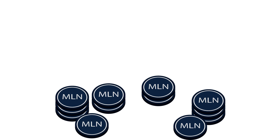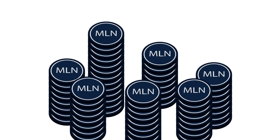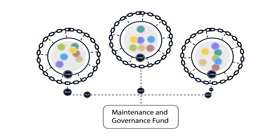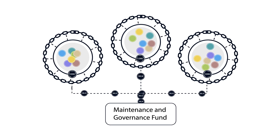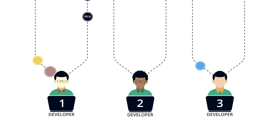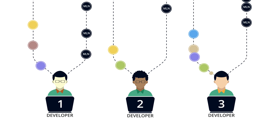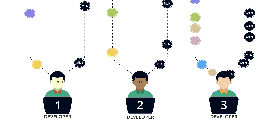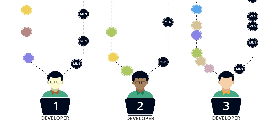Users gain access to the Mellon protocol through Mellon tokens, which give them a limited usage right. Developers are incentivised to develop and maintain software modules with Mellon tokens. These tokens are created through an inflation algorithm which will pay module developers proportionately to the usage of their modules and the difficulty factor associated with the respective module classes. This is the Mellon protocol.